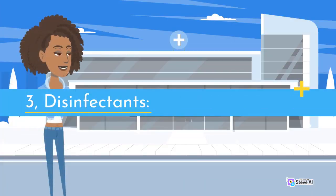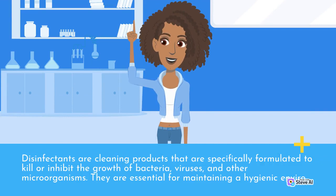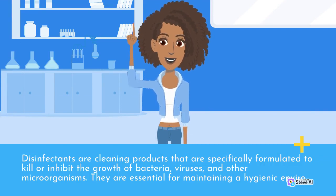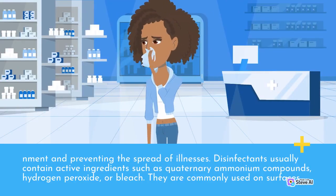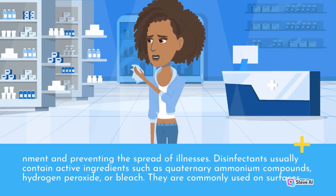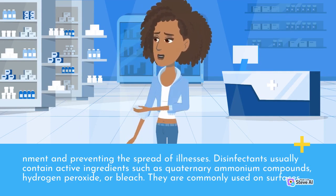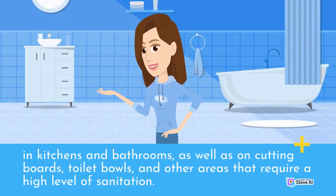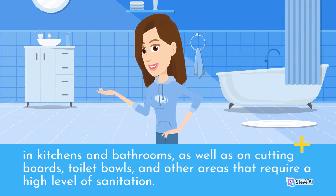3. Disinfectants. Disinfectants are cleaning products that are specifically formulated to kill or inhibit the growth of bacteria, viruses, and other microorganisms. They are essential for maintaining a hygienic environment and preventing the spread of illnesses. Disinfectants usually contain active ingredients such as quaternary ammonium compounds, hydrogen peroxide, or bleach. They are commonly used on surfaces in kitchens and bathrooms, as well as on cutting boards, toilet bowls, and other areas that require a high level of sanitation.